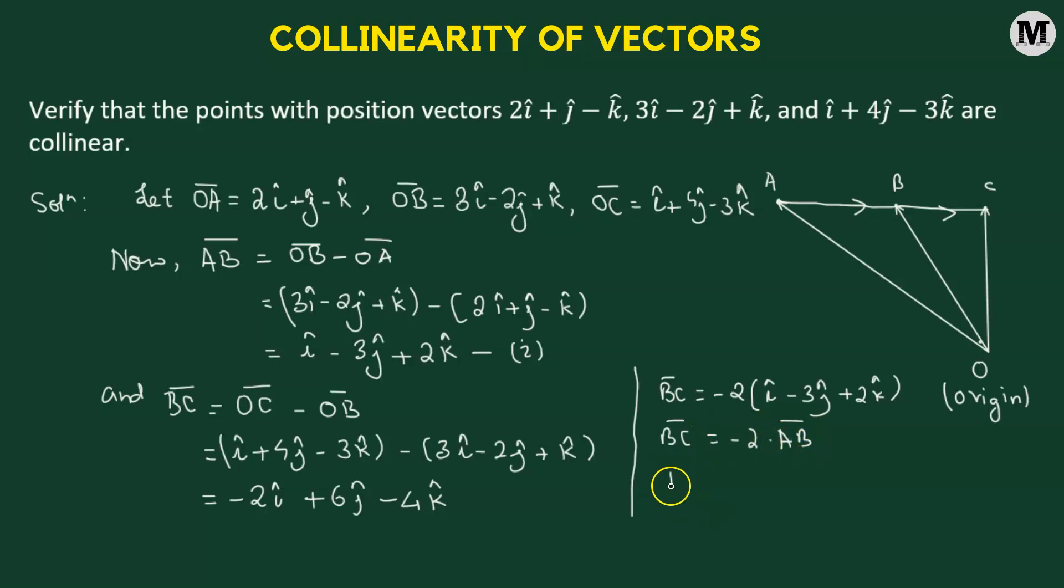So, what we have here? Here we have the vector BC expressed as lambda times AB vector, where lambda is some scalar with a value equals to negative 2. And whenever this particular criterion is met, this tells us that ABC, these three points are collinear. So, we have successfully showed that the points whose position vectors are given to us, these three points A, B, and C are indeed collinear.